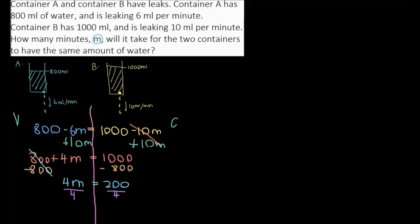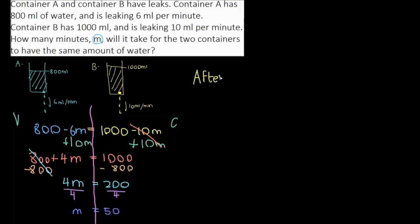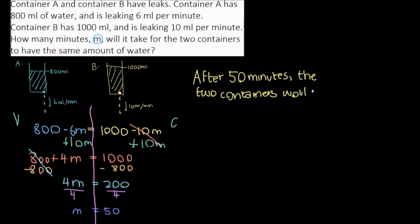4M divided by 4 — we divide out the coefficient, since 4 divided by 4 is 1 — leaves us with M equals 200 divided by 4, which is 50. We don't need to write it as 1M; we just write M equals 50. After 50 minutes, the two containers will have the same amount of water.